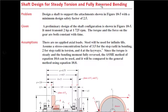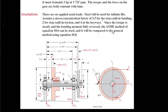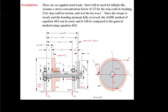Let's walk through this design together. This problem asks us to design a shaft to support the attachments shown in figure 10.5. We have a sheave where a difference in force causes an applied torque. Because of a belt on a pulley, we have a reaction force in X and a reaction force in Y. We have a pressure angle of 20 degrees for the gear teeth, which causes the gear force to be at 20 degrees from the tangent of the gear face.